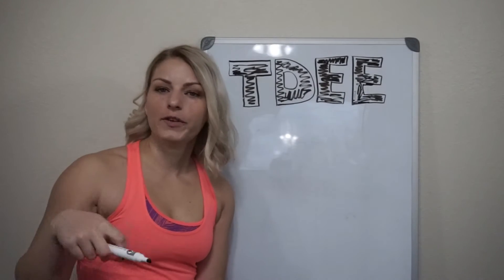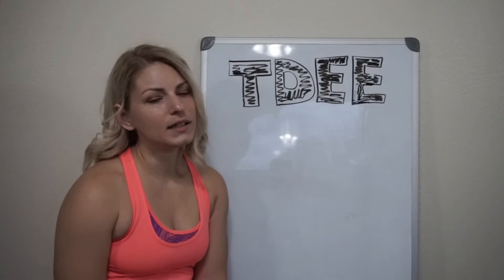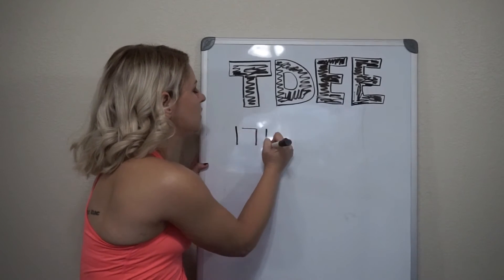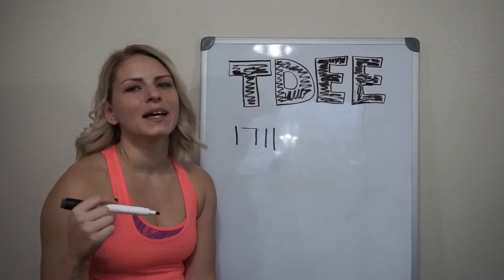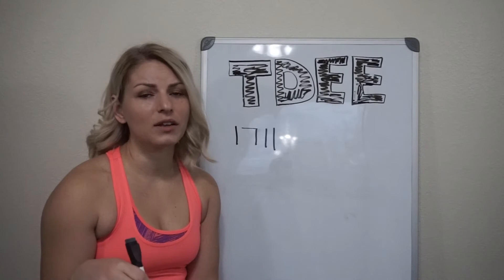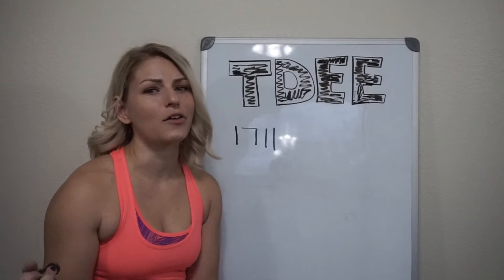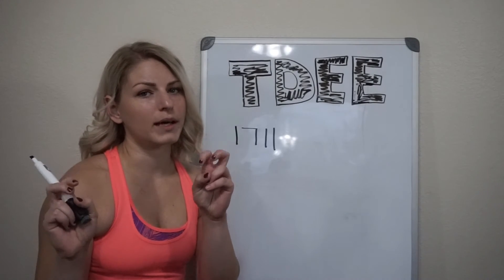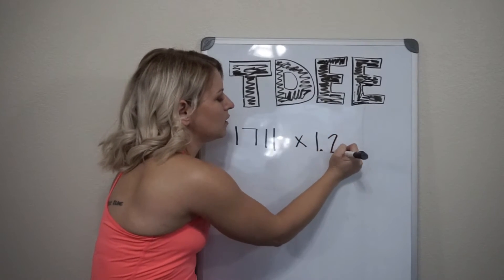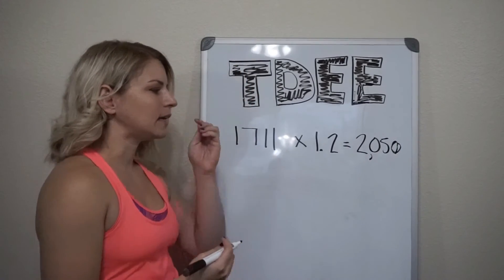Let's do another example. I'm going to put one of my family members' information in here. She is a 23-year-old female, weighs about 200 pounds, has a very sedentary lifestyle, and is about 30 to 35% body fat. Her RMR is 1,711 calories. A lot of you are going to say, how does that work when she has more body fat than me? Well, she's younger than me, and bigger people need a bit more energy. So her Total Daily Energy Expenditure is going to be about 2,050 calories.